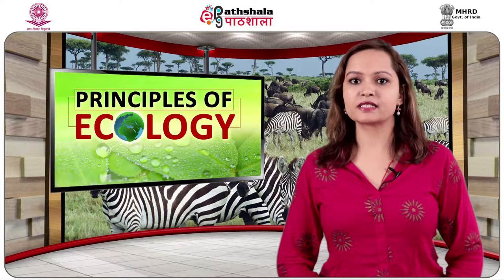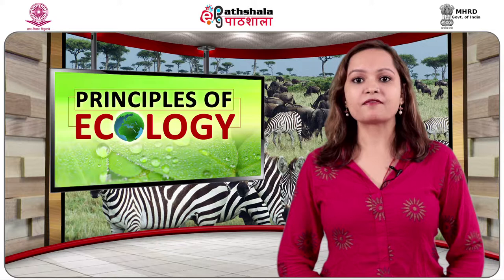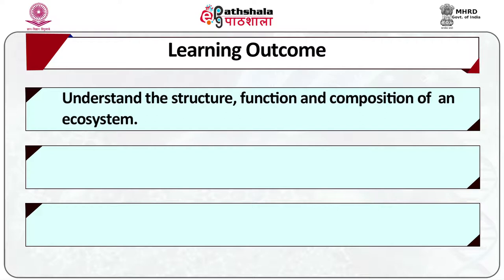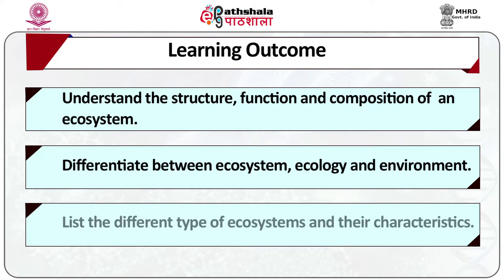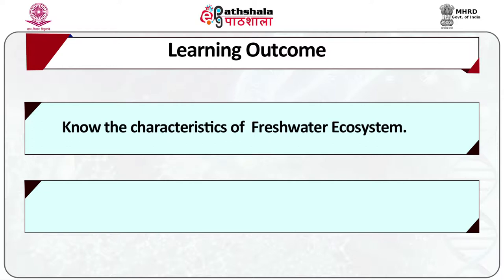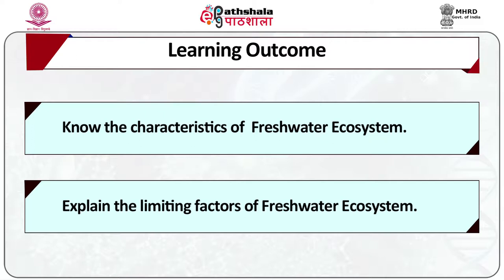The learning objectives of this module are: after the end of this module you will be able to understand the structure, function and composition of an ecosystem; differentiate between ecosystem, ecology and environment; list the different types of ecosystems and their characteristics; know the characteristics of the freshwater ecosystem; and explain the limiting factors of the freshwater ecosystems.